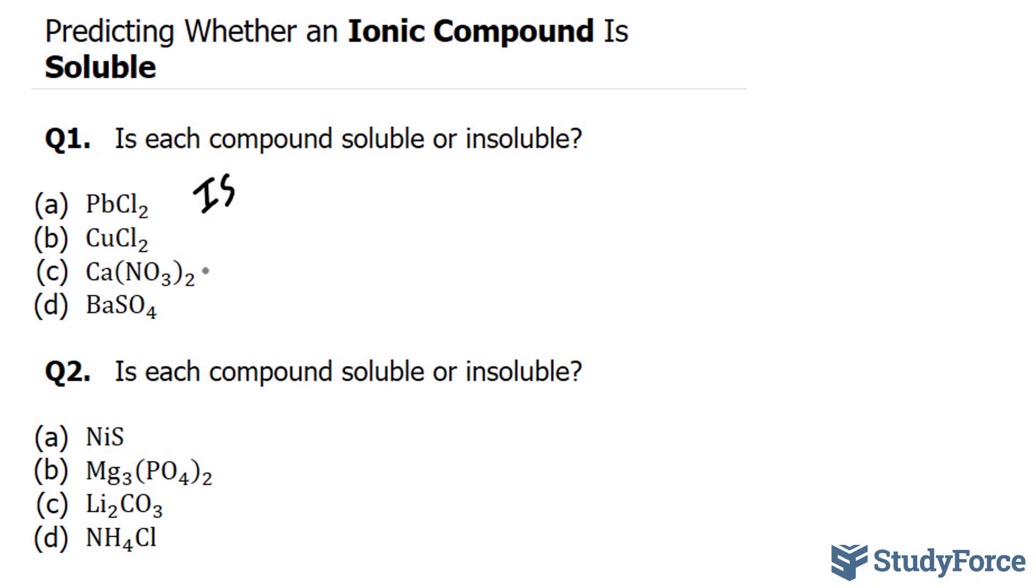Our next compound is copper chloride. As mentioned in part A, this compound contains chlorine, which makes compounds soluble. Copper is not an exception to the rule, so this compound is soluble.